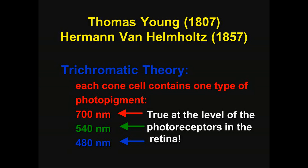Now, we know this is true today. We are well aware that there are three types of photopigments for most humans and that this gives rise to our color vision. We know this to be true at the level of the photoreceptors in the retina.